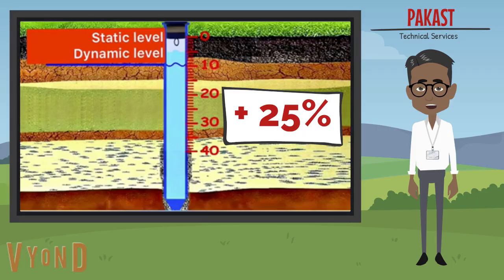It should be mentioned that one of the disadvantages of this method on newly drilled boreholes with a casing on a threaded connection is that this technique most likely will not work. This is because the threaded connections will not provide 100% tightness during the first two months, and the load on the screen will also rise.